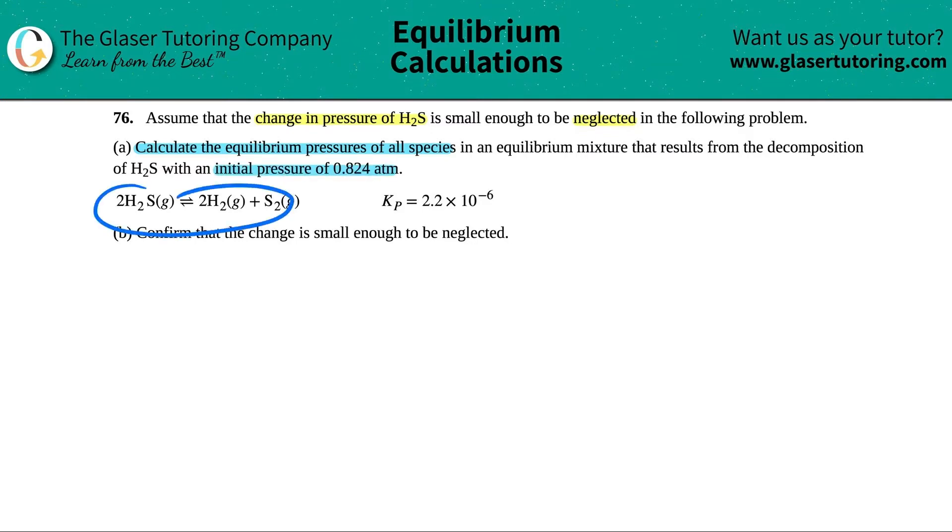And then they give us this equation with the corresponding Kp value. So the first thing I'm going to do, since we're in the equilibrium chapter and we have a balanced equation, I got to write it down. So we have 2H2S and I see that there's coefficients here. So I'm assuming that it's going to be balanced. You could always pause the video just to give it a shot and just check to see that it's balanced. But this one looks pretty good to me.